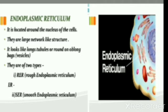Proteins are manufactured and then transported to the rough endoplasmic reticulum, then to the smooth endoplasmic reticulum, and then to different parts of the cell. In smooth endoplasmic reticulum, lipids and fats are manufactured, and another function is that it helps in detoxifying many poisons and drugs.